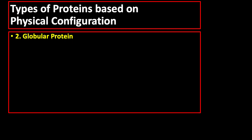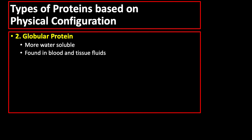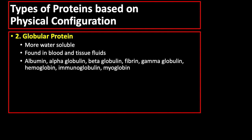The next type is globular protein, which is more water-soluble than the other classes of proteins and is found in blood and tissue fluids. Examples of globular proteins are albumin, alpha-globulin, beta-globulin, fibrin, gamma-globulin, hemoglobin, immunoglobulin, and myoglobulin.